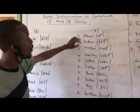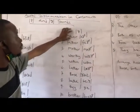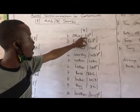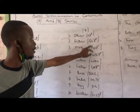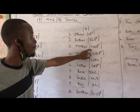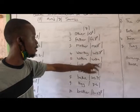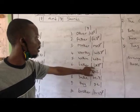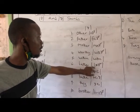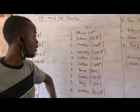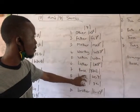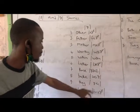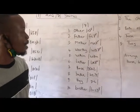Now if you look at the voiced sound, what you have is: other, father, mother, worthy, within, leather, those, both, they, brother.